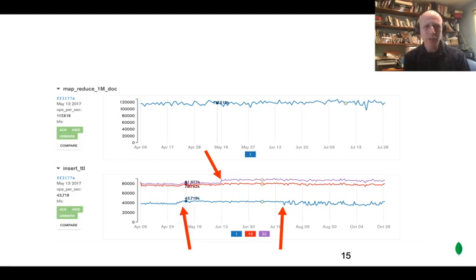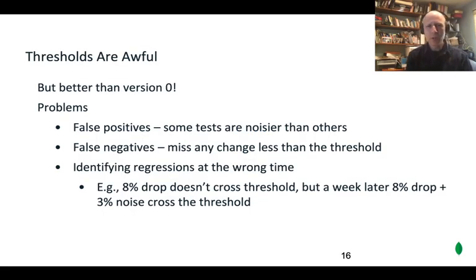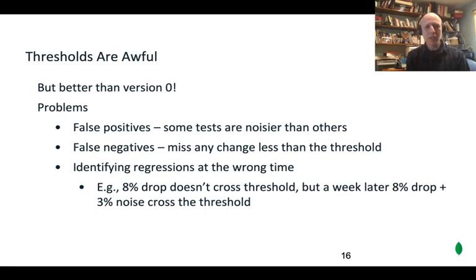The noise on that bottom graph after July is higher than the signal in the other two places. You can adjust the threshold per test, and we did, but it's not great. So where does that leave us? In practice, using thresholds is awful — an awful system, but much better than version zero. To reiterate the problems: we had a lot of false positives because some tests are just noisier than others. We have lots of false negatives because we miss any change less than the threshold. It can also identify regressions at the wrong time — if you have a drop less than the threshold, say 8%, but a week later you have some noise or another small drop that takes you across the threshold, you've rightfully marked that something changed but at the wrong place. A human has to spend a fair amount of time figuring out exactly what happened and when.